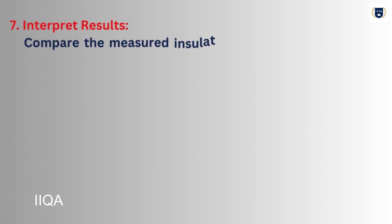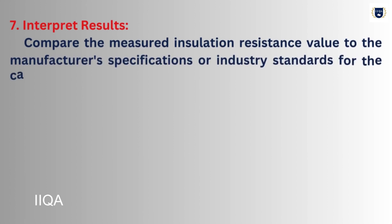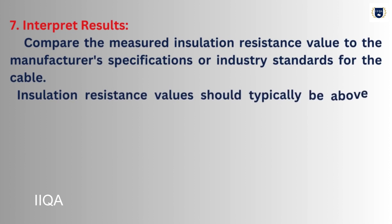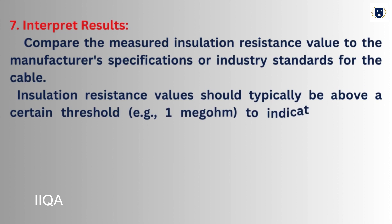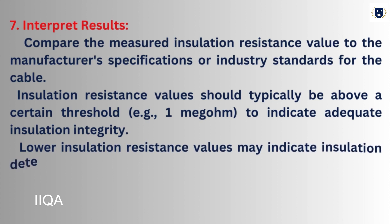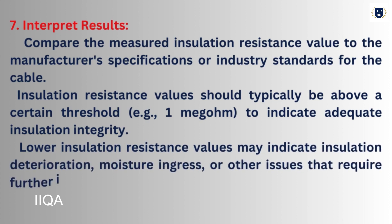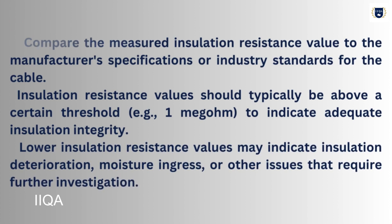Step 7 - Interpret Results: Compare the measured insulation resistance value to the manufacturer's specifications or industry standards for the cable. Insulation resistance values should typically be above a certain threshold, for example 1 megohm, to indicate adequate insulation integrity. Lower insulation resistance values may indicate insulation deterioration, moisture ingress, or other issues that require further investigation.